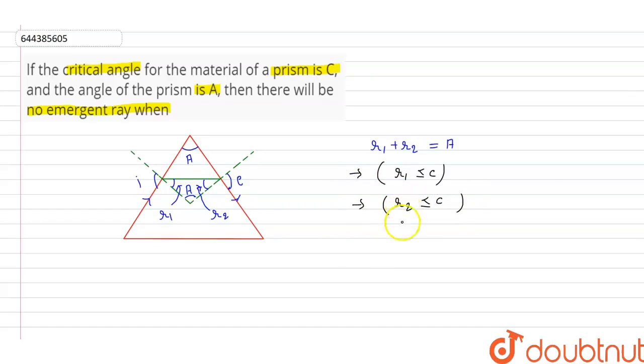Combining these two statements, we conclude that R1 plus R2 greater than C, then there will be no emergent ray. And there is another method.